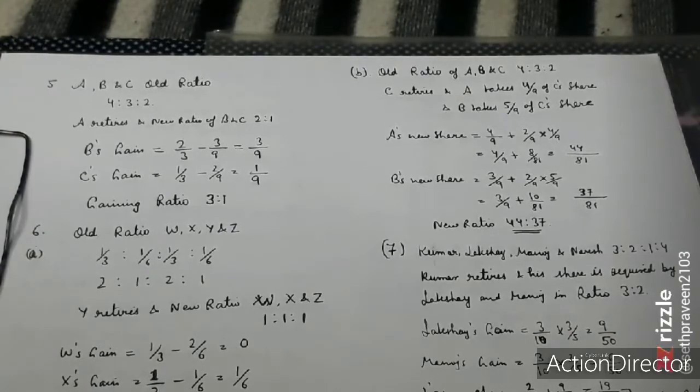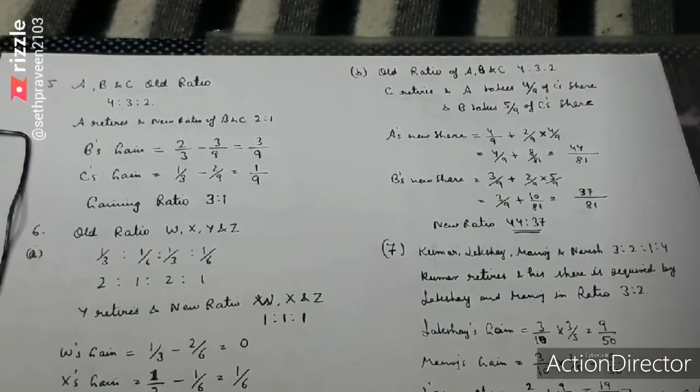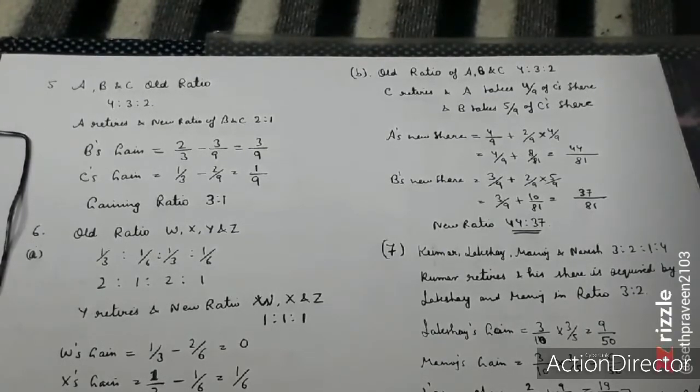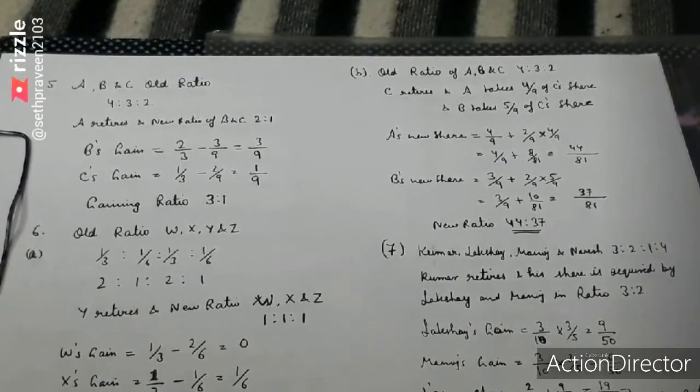A's share becomes 4 by 9 plus 8 by 63, which is 36 by 63. B's share is 3 by 9 plus 6 by 63, equals 27 by 63. So the new share becomes 44 to 27. With the old share gain, it's 44 to 27.